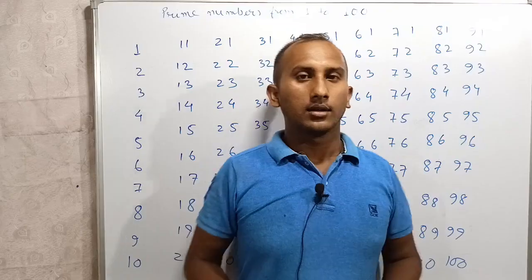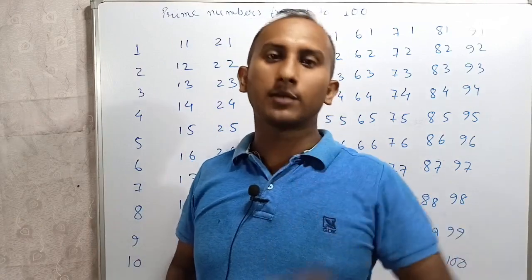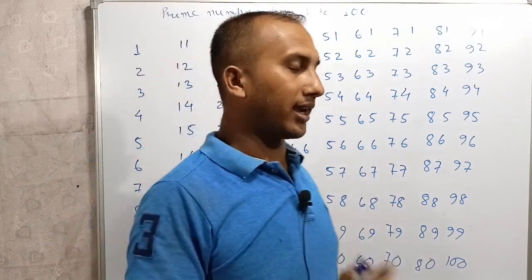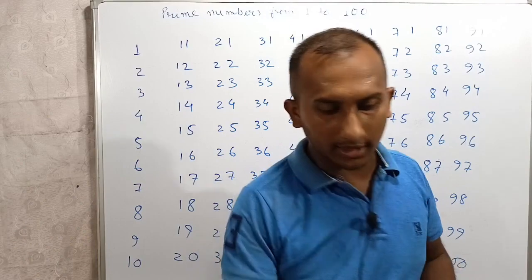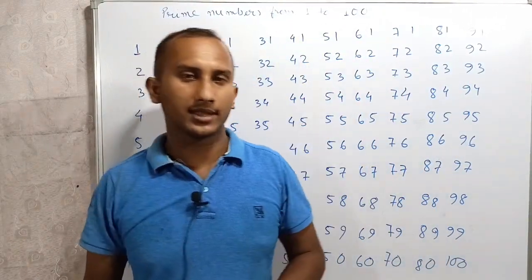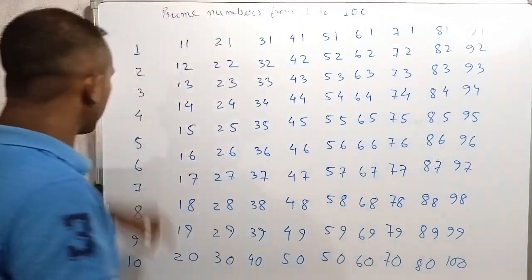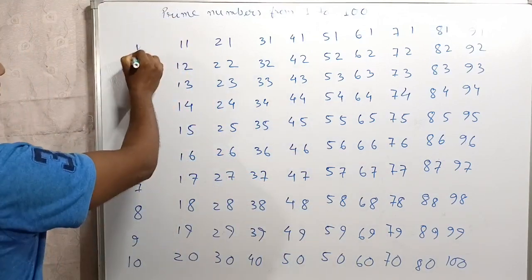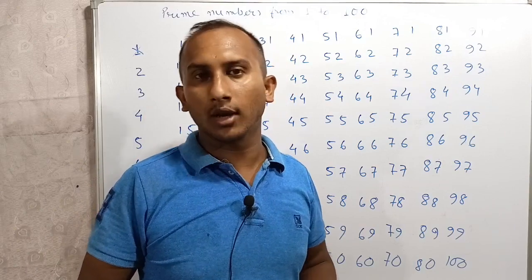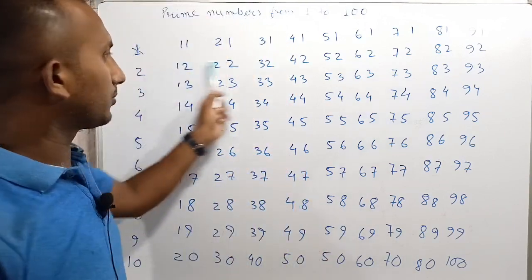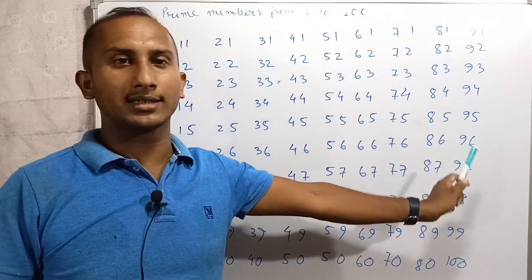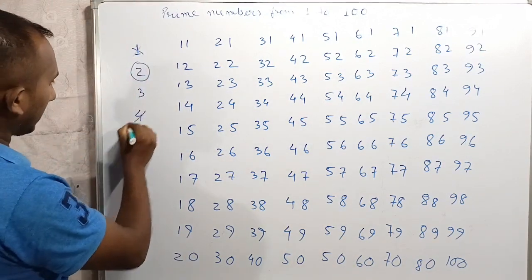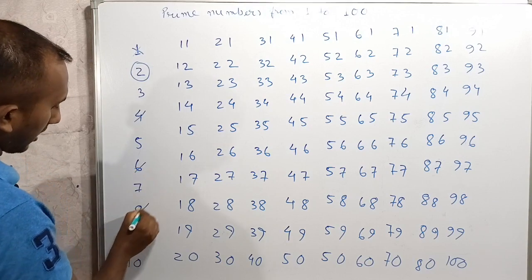Which number has only two factors? That is the prime number. So my dear students, I will write 1 to 100. I will write 1 first. 1 is neither prime nor composite.